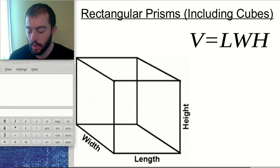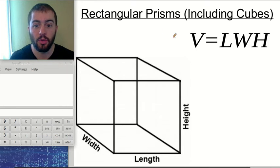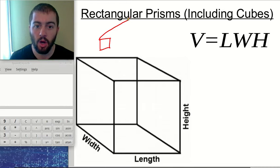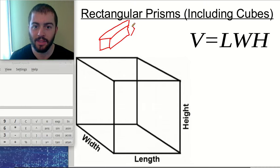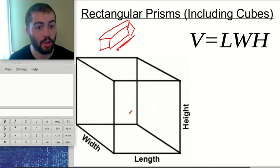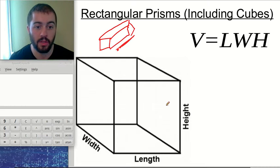The first shape would be a rectangular prism. This includes cubes, but rectangular prisms don't always have to be cubes. We could have a rectangular prism that's long and skinny like this, or something closer to the shape of a cube where all the sides are almost the same.